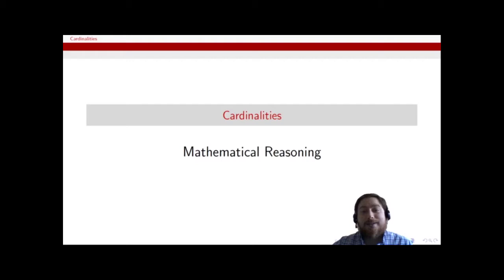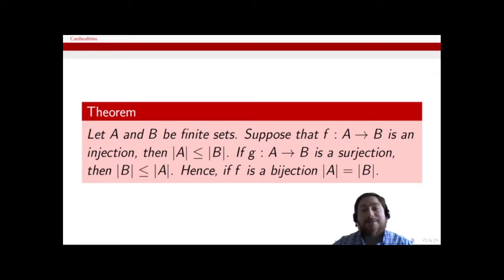The first thing I want to note is that if we have finite sets, and we have a mapping which is an injection, then the cardinality of A is less than or equal to the cardinality of B. Or if we have a mapping from A to B which is a surjection, or it's onto, then the cardinality of B has to be less than or equal to the cardinality of A.